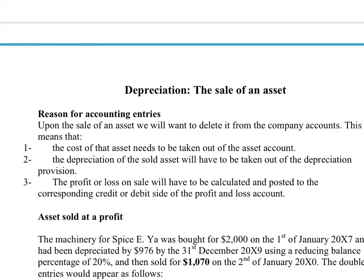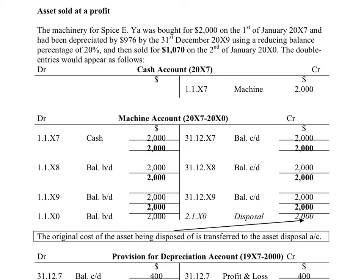In that disposal account we would include the original cost of the asset, the historic cost, how much depreciation has been taken away in total, and whether we make a profit or a loss when we come to sell the asset. From previous videos you would have seen that when we buy the fixed asset — in this case I bought a machine for two thousand dollars — the original double entry is credit the cash as we paid cash for it and debit the machine account. That amount just gets carried down and brought down to the beginning of each year and at the end of each year until we finally decide to sell the asset or it no longer works.